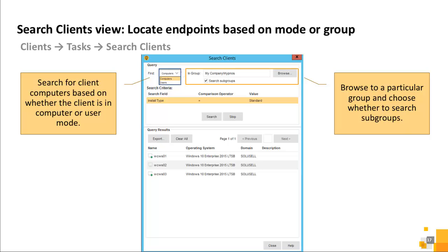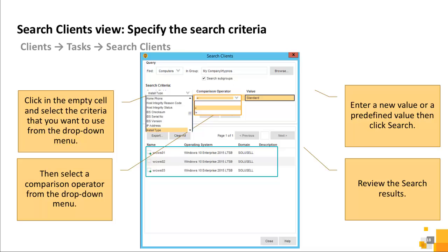Use the Search Clients view to locate endpoints by mode or group. The Search Clients view gives the option to find client computers based on whether the endpoint is in computer or user mode, and you can browse to a particular group and choose whether to search subgroups. After choosing a mode and group, specify the search criteria by clicking in the empty cell and selecting criteria from the dropdown menu. Then select a comparison operator from the dropdown, enter a value, click Search, and review the results.